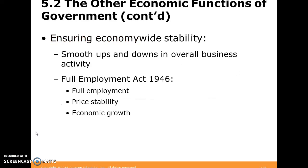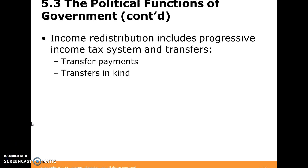Sometimes the economy isn't stable — there are spikes, downturns, and things are a little jagged. Sometimes we want the government to help smooth this process. There is the Full Employment Act of 1946, under which Congress is tasked with ensuring economic growth, price stability, and reaching full employment. It could be that the government proposes some sort of tax system and transfer system to ensure stability, which we'll talk about now.